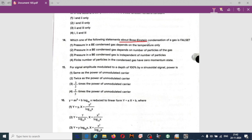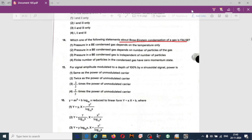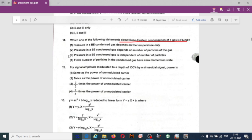Next question: which one of the following statements about Bose-Einstein condensation of a gas is false? Actually Bose-Einstein condensation depends upon number of particles as well as temperature. So if you read these options, option three is not correct. It is not independent of the number of particles, it depends upon the volume, so number of particles. That's why option three is correct.